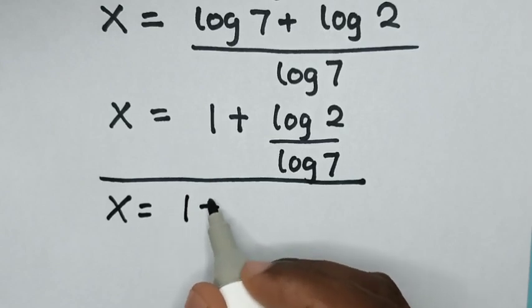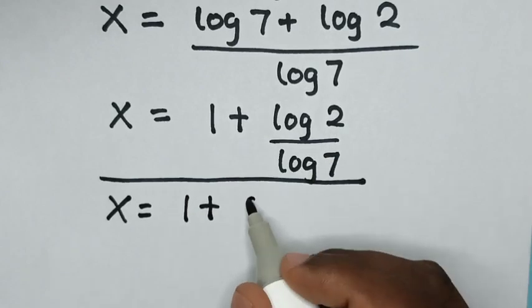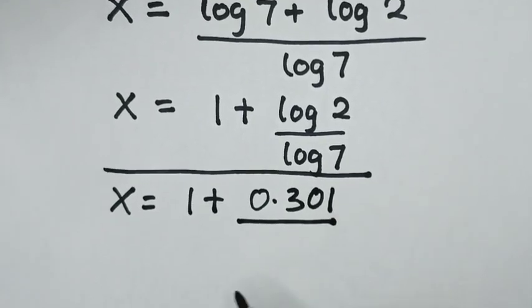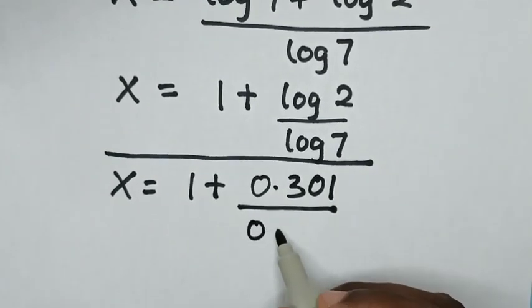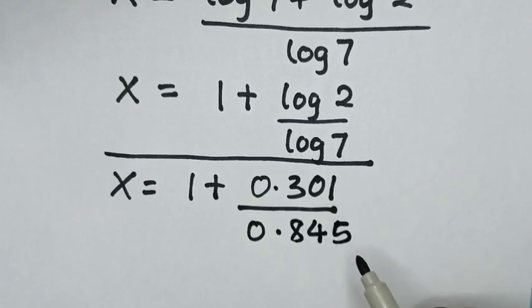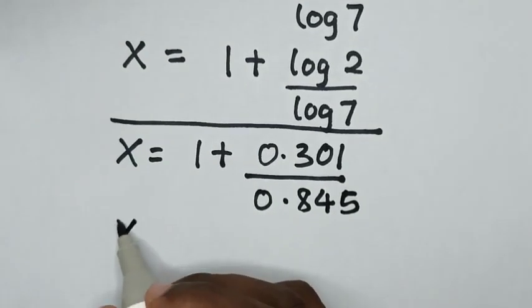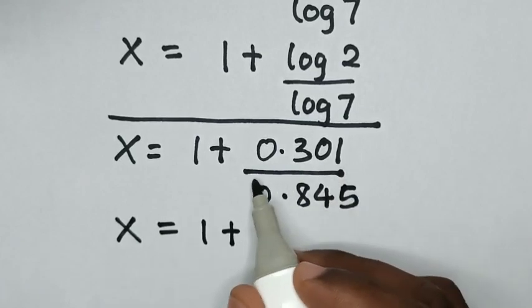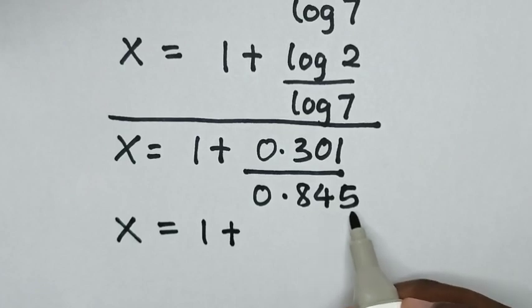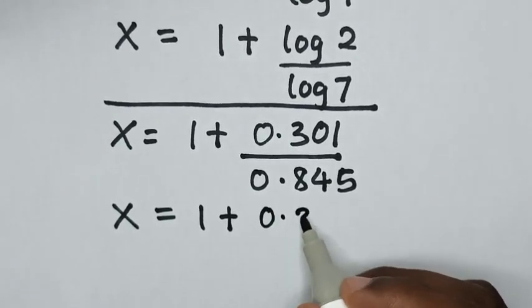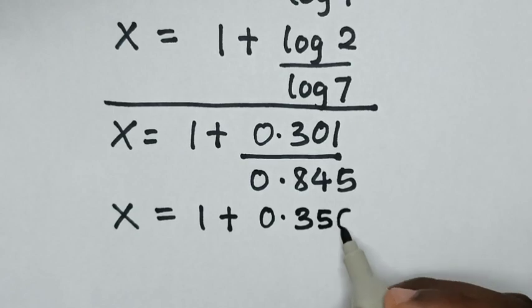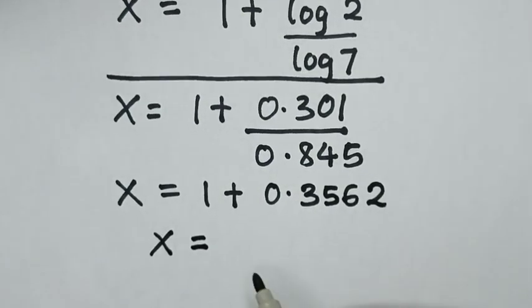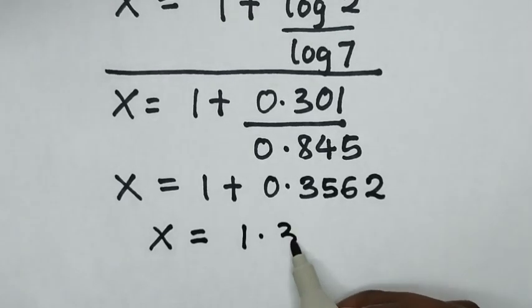x equals 0.301 over 0.845, which is 0.3562. Then it will be x equals this plus this, which is 1.3562.